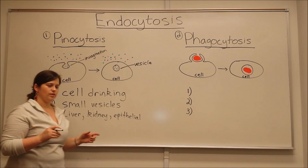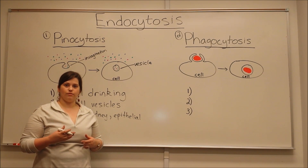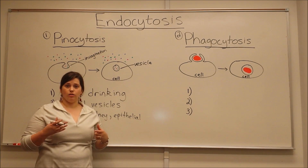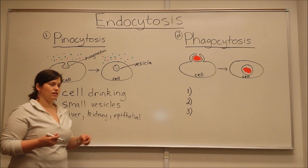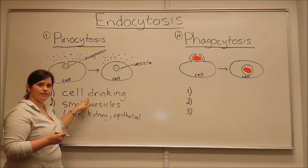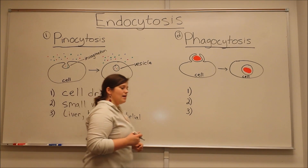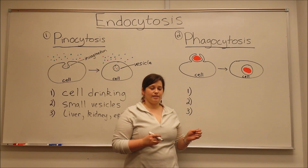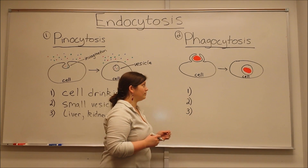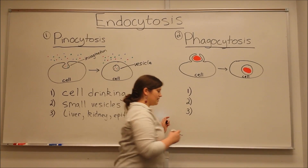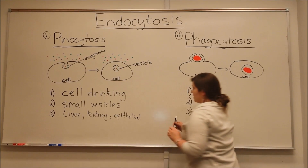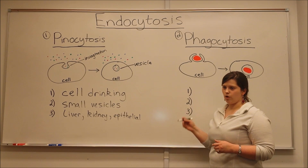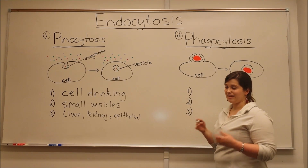The result of pinocytosis is the uptake of small soluble components into the cell in this process of cell drinking. Now let's talk about phagocytosis. Relative to pinocytosis, you can think of phagocytosis as a form of cell eating.